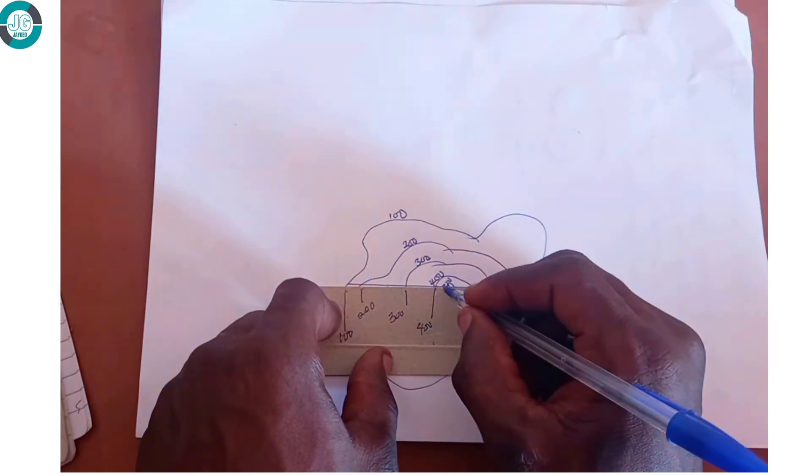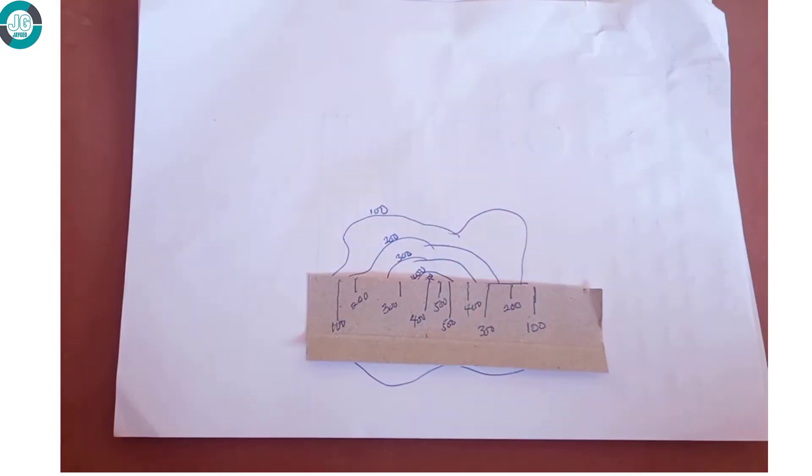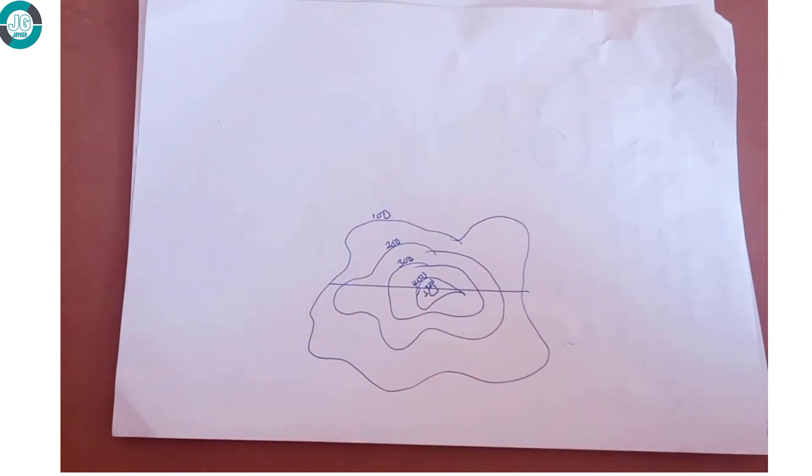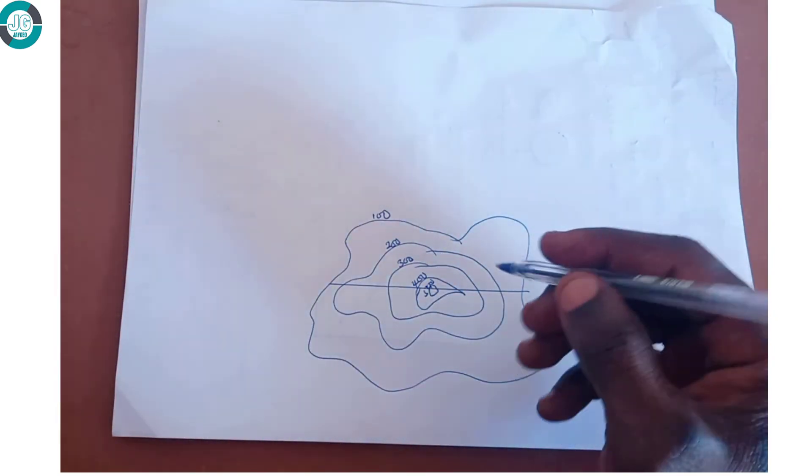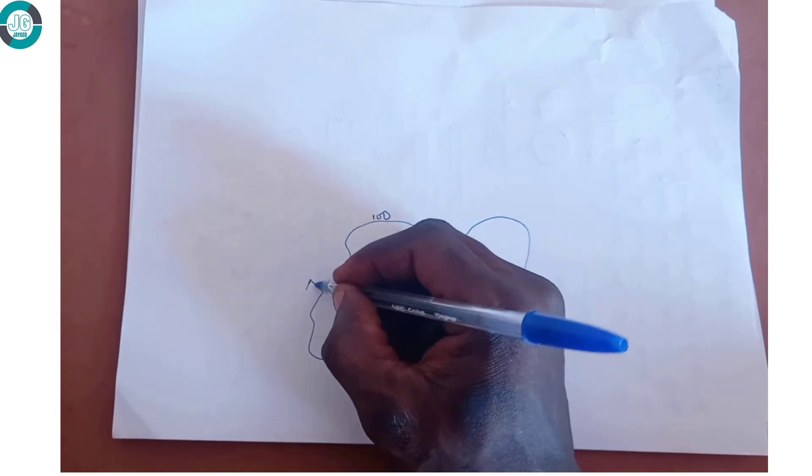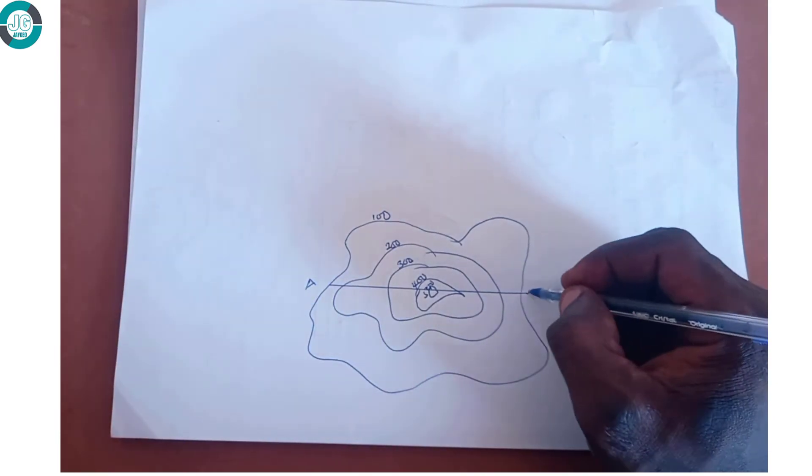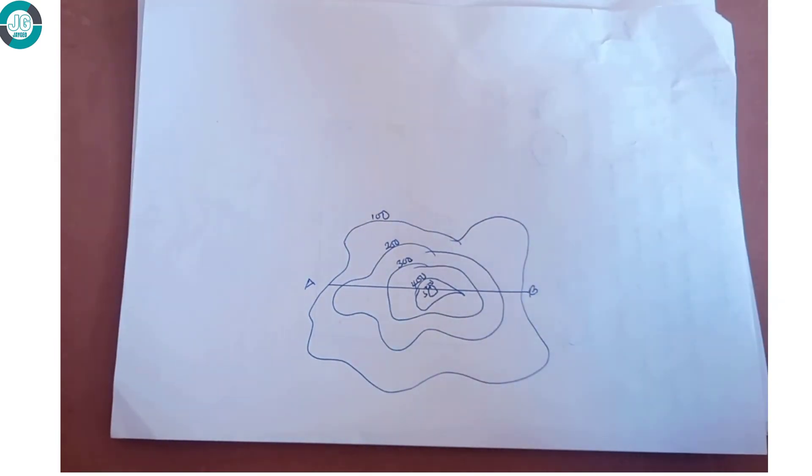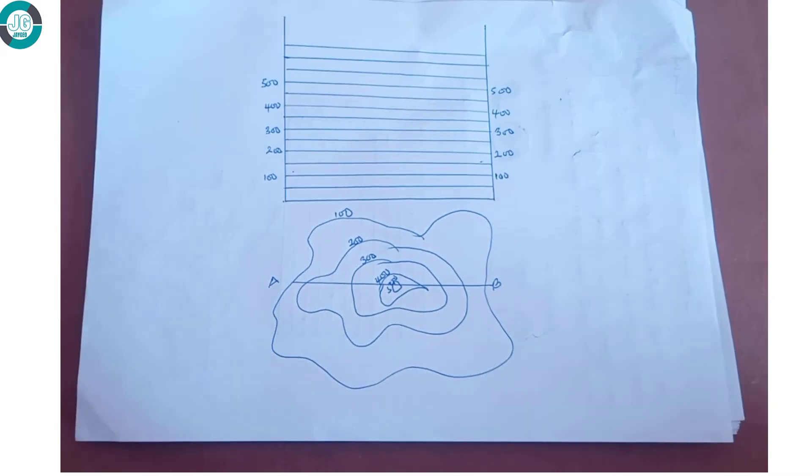So this is how the paper looks like after the value of each contour has been written down. What we do next is to transfer these values onto a graph, and this is where we are going to draw the side view of the objects on the map.